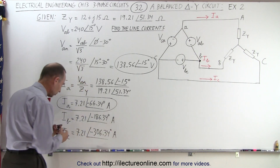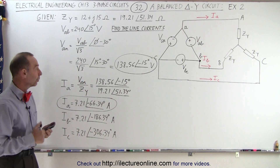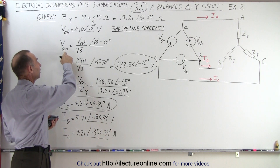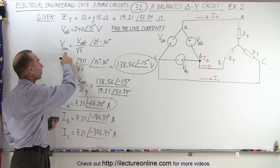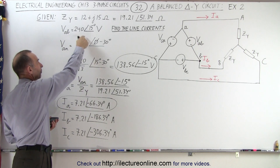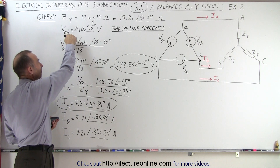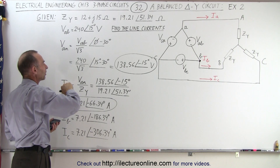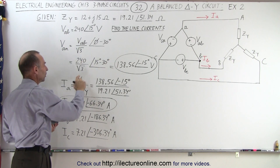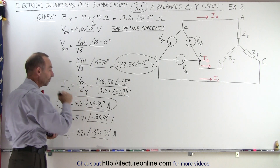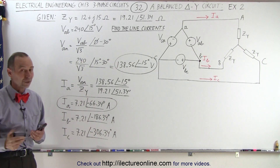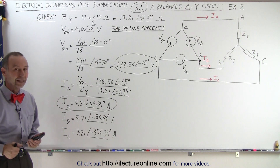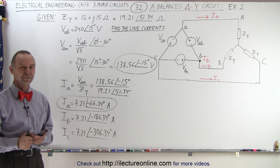You can see quite readily that once you find the equivalent phase voltage — converting from the given line voltage VAB with its phase angle difference to VAN — you divide it by the impedance and then get the three line currents in quick succession. And that's how it's done.